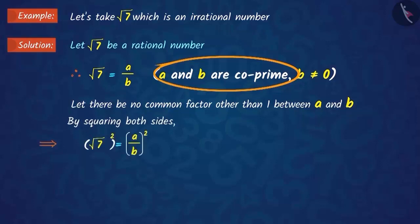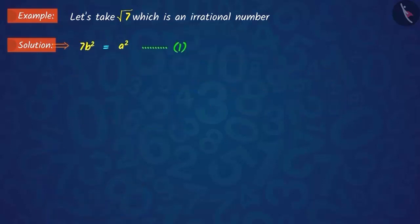By squaring both sides and rearranging, we get 7b² = a². That means that 7 divides a². Therefore, 7 will also divide a.